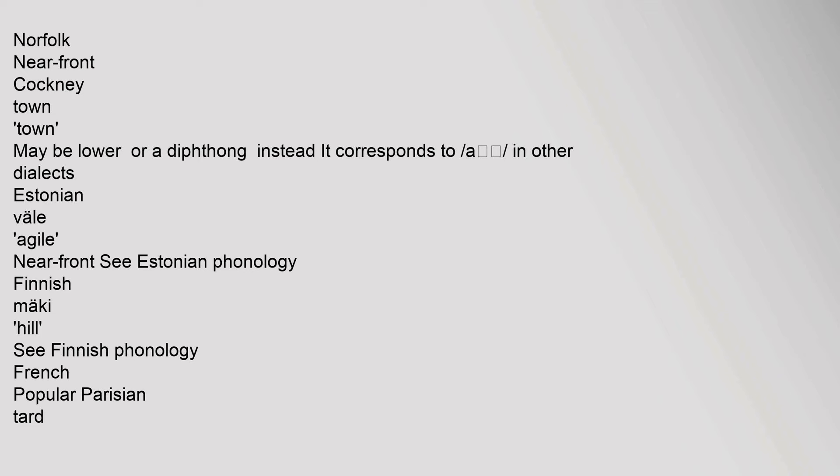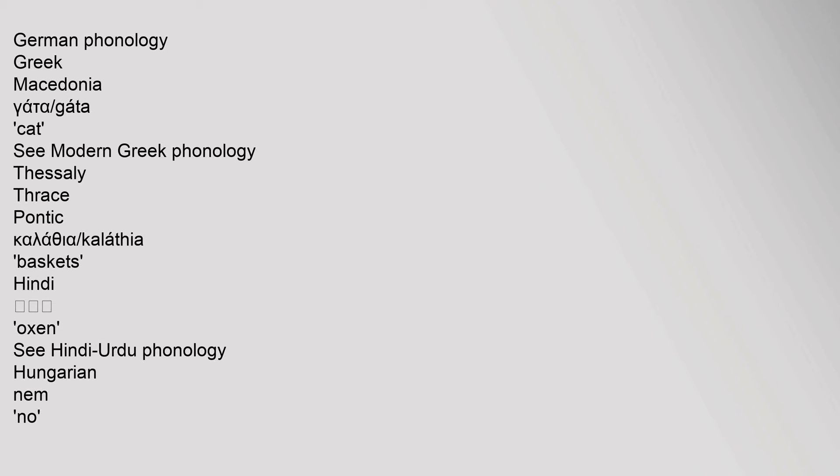German: see German phonology. Greek Macedonian: 'γάτα' (cat); see Modern Greek phonology. Thessaly, Thrace, Pontic: 'καλάθια' (baskets). Hindi: 'bail' (oxen); see Hindi-Urdu phonology. Hungarian: 'nem' (no) — typically transcribed in IPA with /ɛ/; see Hungarian phonology.